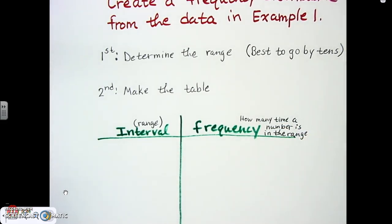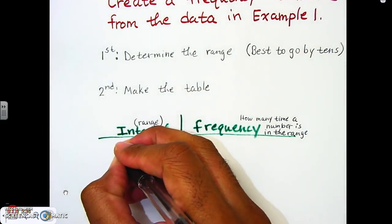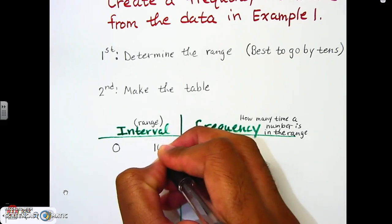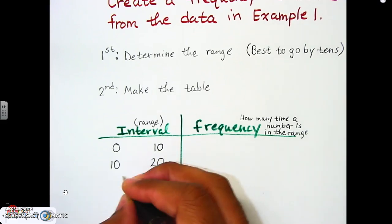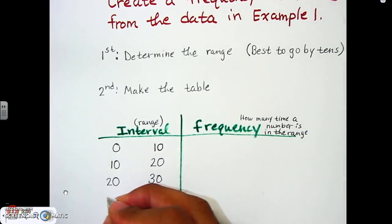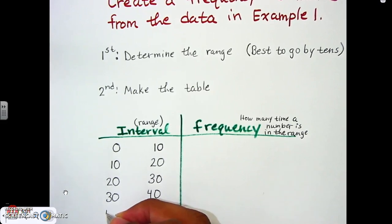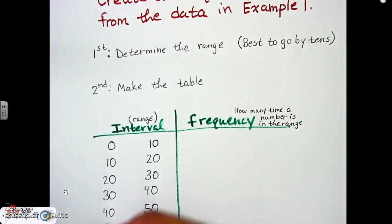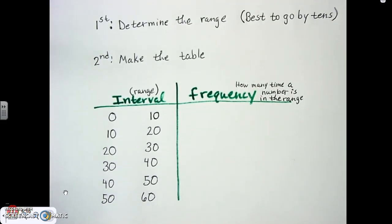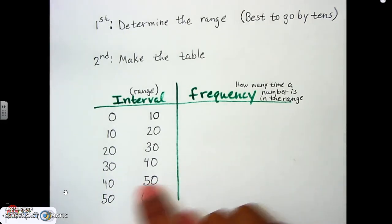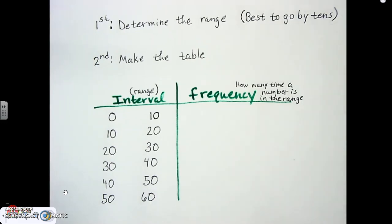Let's figure out what our ranges are going to be, going by tens. We'll set up intervals: 0 to 10, 10 to 20, 20 to 30, 30 to 40, 40 to 50, and 50 to 60. Remember, the numbers from our stem-and-leaf plot went up to about 56 as the highest number. So 56 would be in the 50 to 60 interval, which is why we include that range.